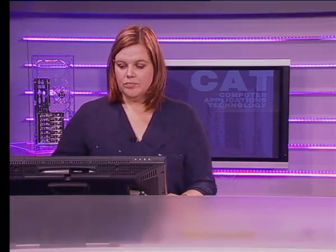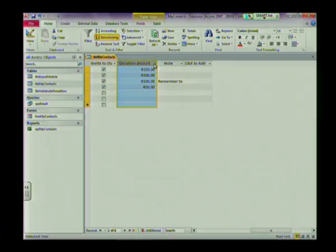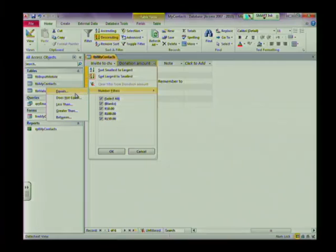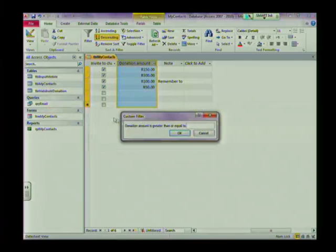We're now going to look at something called a filter and this is quite a useful little function as it filters out information according to your specific criteria. So for instance we would want to know how many people donated more than 50 Rand. Let's look at our table again. I'm going to select my drop down. Do not right click, just normal select. And then I'm going to select the number filters. I want to see those that have donated more than 50 Rand. So I'm going to select greater than and I'm going to type in my value, which in this case is 50.